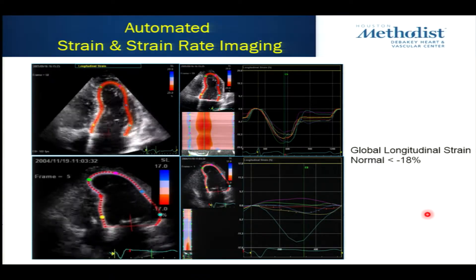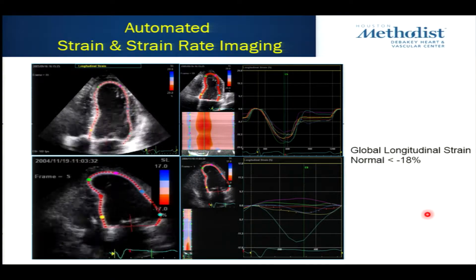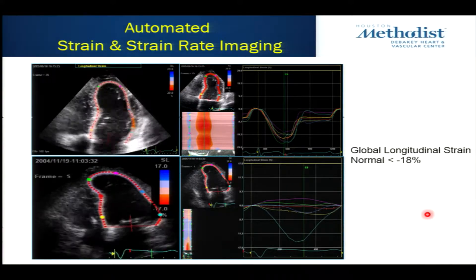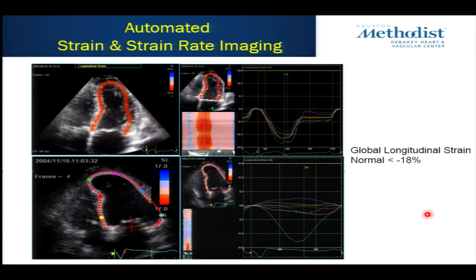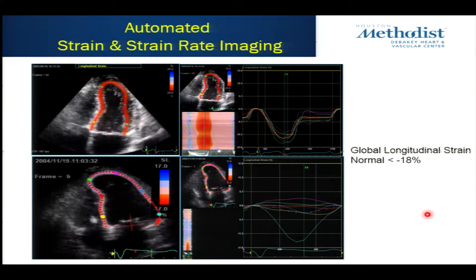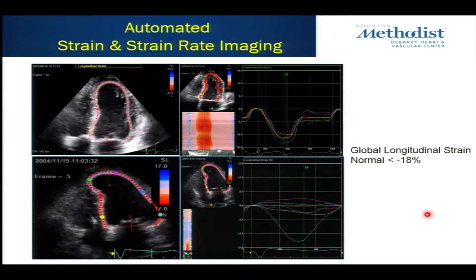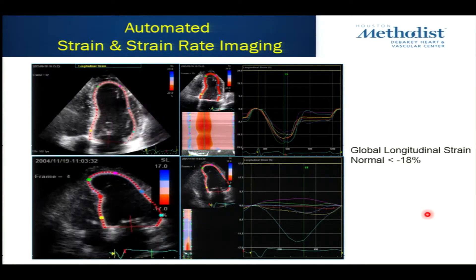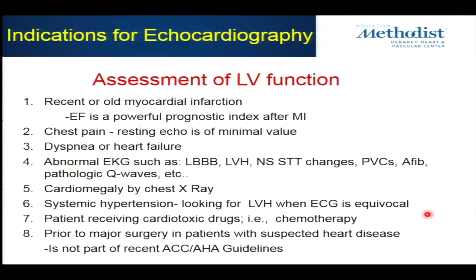Where do we use strain imaging? We use it to emphasize what we interpret. But nowadays in cardio-oncology, which is an evolving field, we look at this global longitudinal strain before individuals are taking chemotherapeutic drugs that can affect the heart. So this is where we use it most of the time.